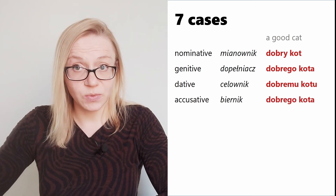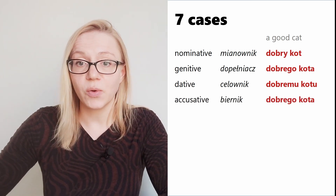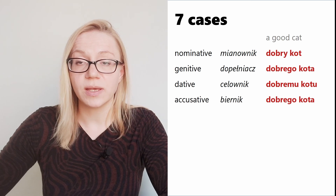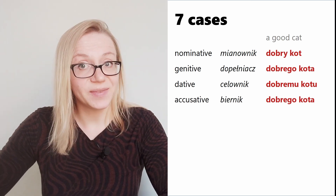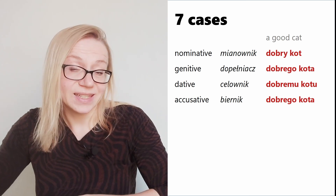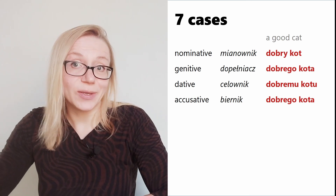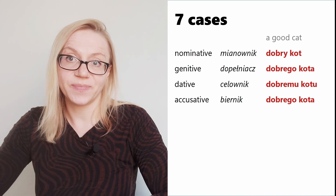The accusative case is next, in Polish 'biernik'. The good cat in the accusative case would be: 'dobrego kota'.